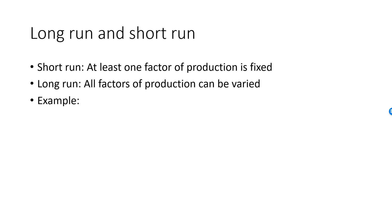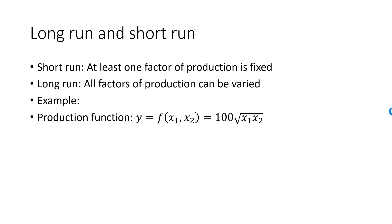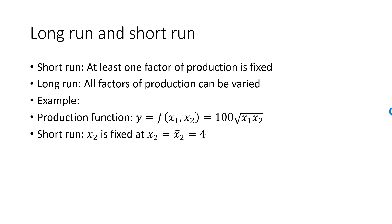Here is an example. The production function is y equal to 100 times the square root of x1 times x2. If the firm is free to pick x1 and x2 to be any value it likes, then they are facing a long run decision problem. If, for example, x2 is fixed at a given value — say x2 bar equals 4 — then the firm is facing a short run decision problem.